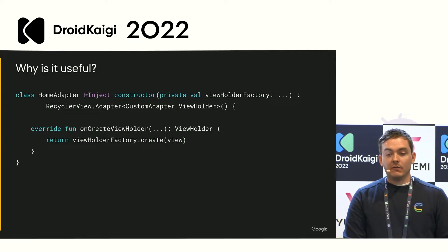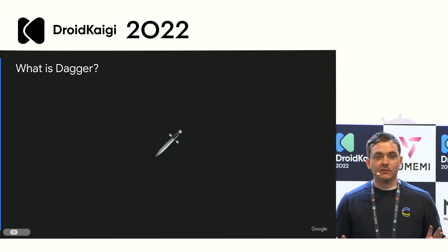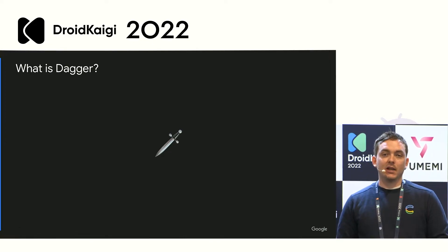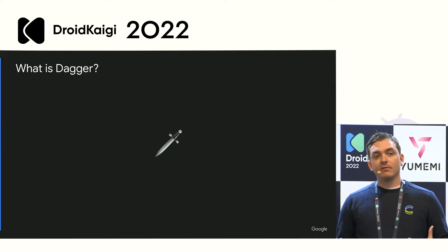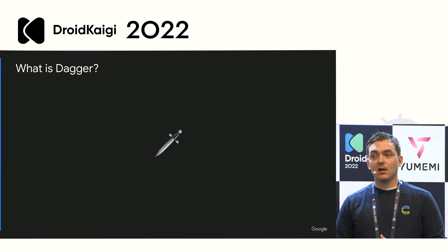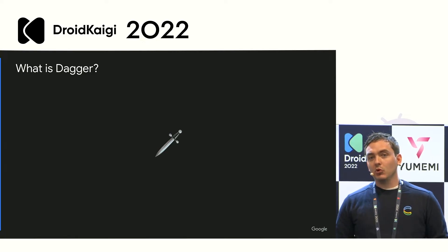So what is Dagger? We've talked at a high level about dependency injection itself. Dagger is a specific library for providing dependency injection. There are multiple libraries, but Dagger is really favored on mobile partially because of its performance. Everything happens at compile time, so you're not going to run into issues during runtime or with reflection. That makes things great because you don't want to do that on mobile at all.